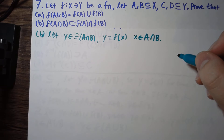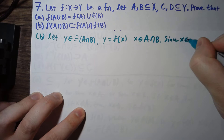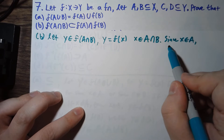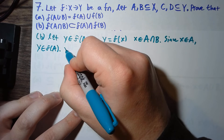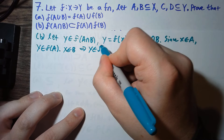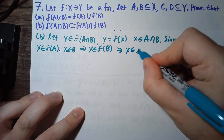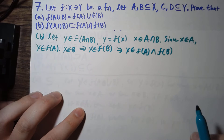Since x is in A and y is f of x, that means that y will actually be in f of A. But similarly, since x is in B, this will imply that y is in f of B. And so since it's in both, that implies that y is in f of A intersect f of B, and we have that this subset equation is true.